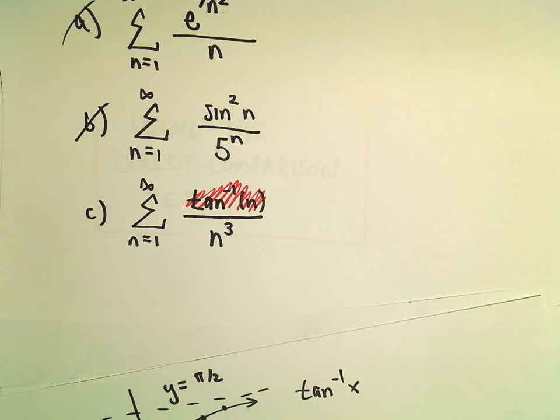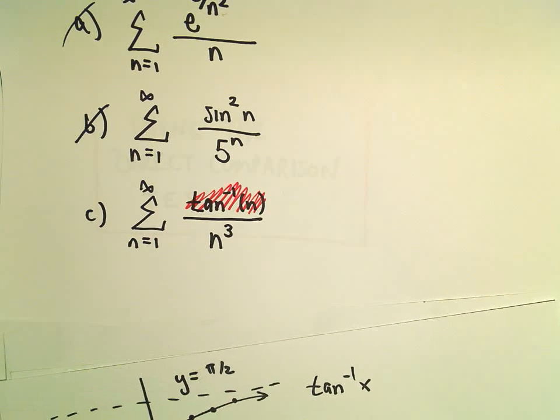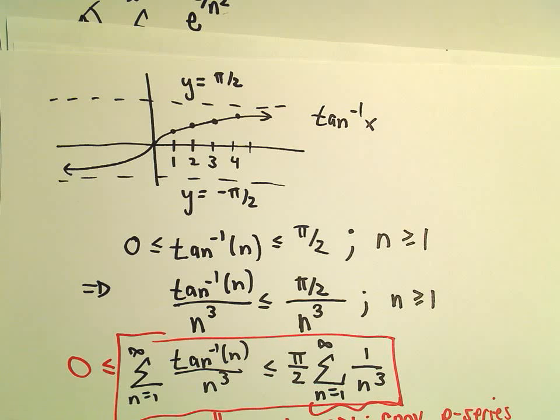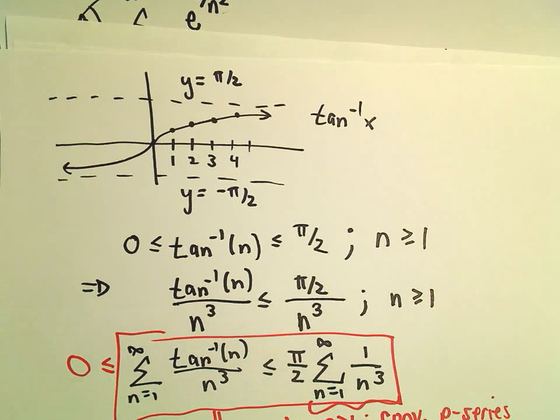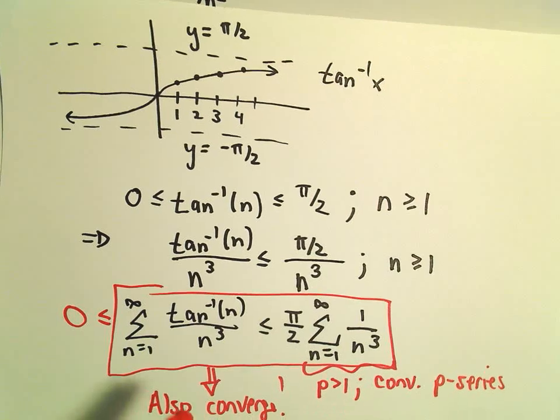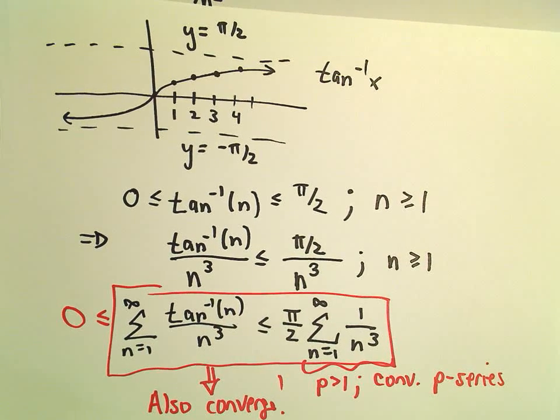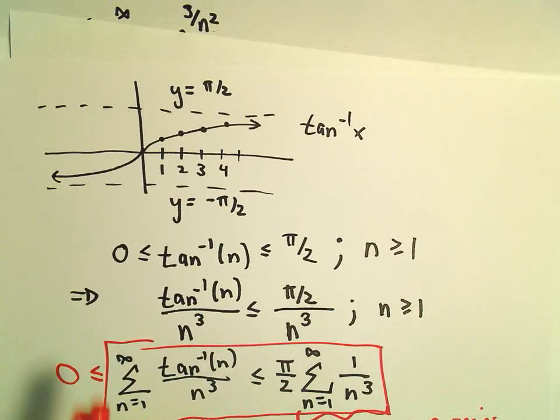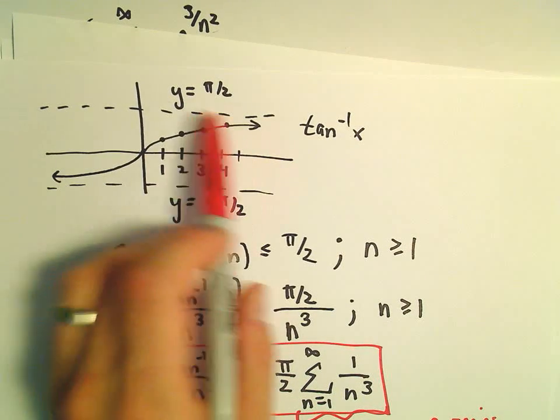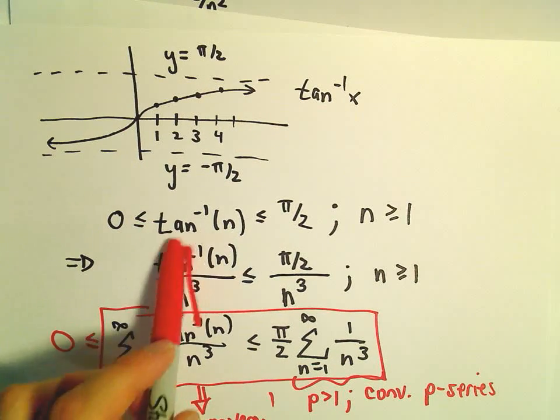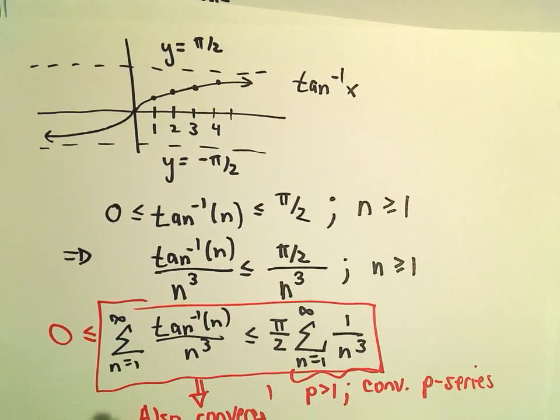At that point, I'm thinking maybe this is also a convergent series, and somehow I can use some sort of comparison test with that series 1 over n cubed. And that's exactly what we did. We had to justify the correct inequalities a little bit. But to do that, we just had to really remember the graph of arctangent and the fact that it has an asymptote. And I think if you can remember this part, the rest of it isn't too terribly bad.